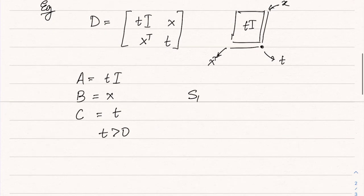So what is the Schur complement? Assume that t is greater than 0. We can see that S1 is equal to t minus x transpose t inverse x, which is basically t minus x transpose x by t.